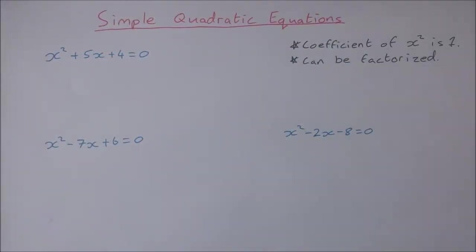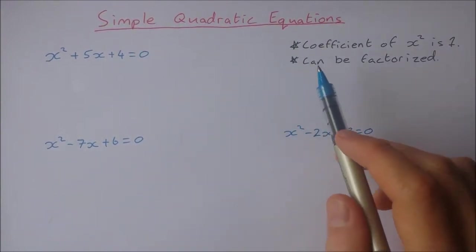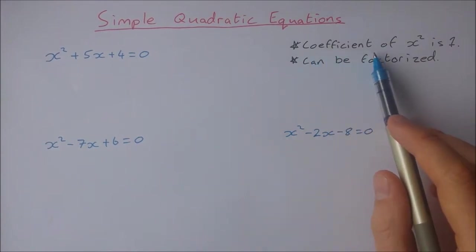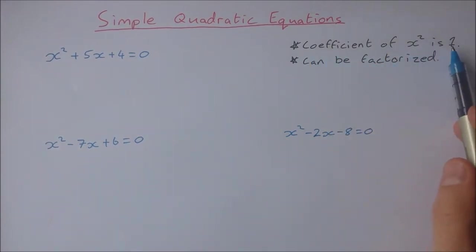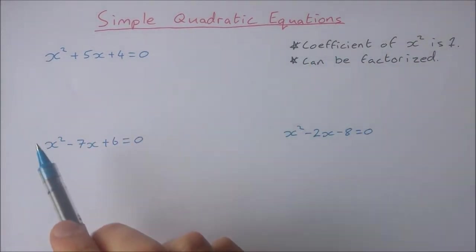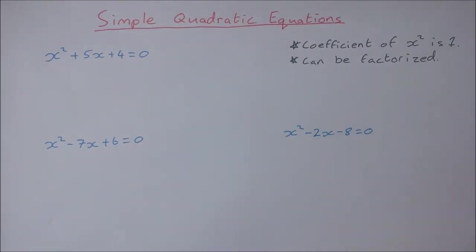In this video I'm going to take a look at some simple quadratic equations and solving for the two solutions. A simple quadratic equation is one where you have the coefficient of x squared is 1. So you see in the three examples here, it's just an x squared on its own. There's no coefficient before it and they can be factorized.